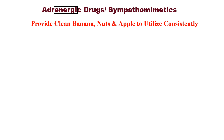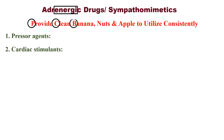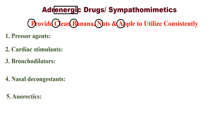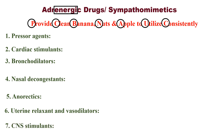For that, remember: 'Provide Clean Banana Nuts and Apple To Utilize Consistently.' Here, P stands for Pressure agents, C for Cardiac stimulants, B for Bronchodilators, N for Nasal decongestants, A for Anorectics, U for Uterine relaxants and Vasodilators, and C for CNS stimulants. Let us see the drugs for each category.